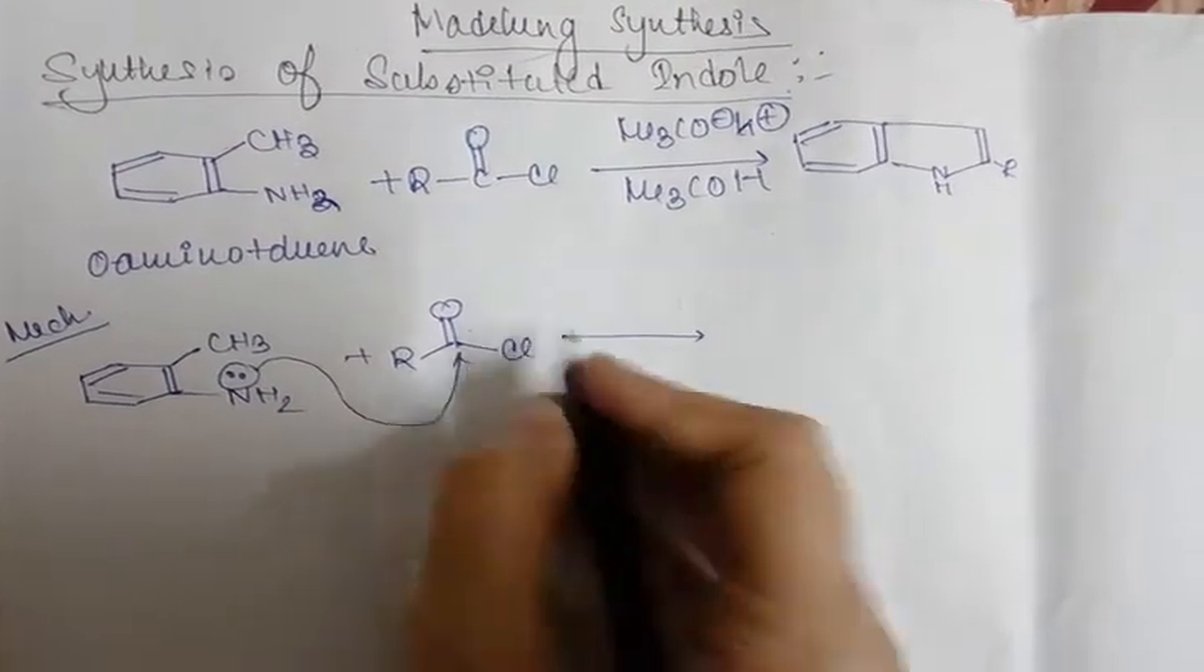Now the mechanism: the lone pair of nitrogen will attack the electrophilic center, meaning the carbonyl carbon. Then chlorine will leave as leaving group and an intermediate will form.